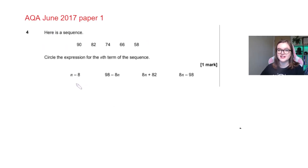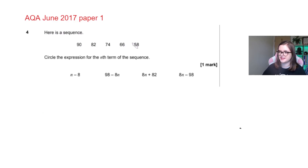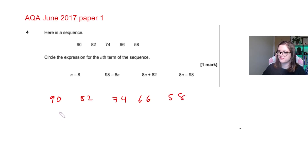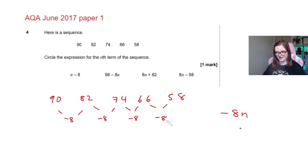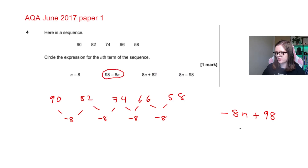Now on to exam questions. First: AQA June 2017, Paper 1 — multiple choice. The sequence is 90, 82, 74, 66, 58. Circle the expression for the nth term. The difference is −8 each time, so −8n. Then how do I get from −8 to 90? Add 8 to get to 0, then add 90 — that's +98. So the answer is 98 − 8n.